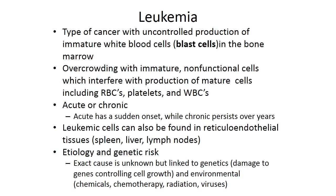Leukemia can be acute or chronic. Acute leukemia has a sudden onset while chronic persists over years. These leukemic blast cells interfere with normal production of mature cells and can also spread into different tissues, such as the reticuloendothelial tissues including the spleen, liver, and lymph nodes, causing various signs and symptoms depending on where they spread.